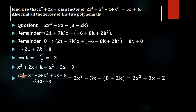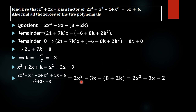So 2x⁴ + x³ - 14x² + 5x + 6 divided by x² + 2x - 3 gives quotient 2x² - 3x - (8 + 2k). Substituting k = -3: 8 + 2(-3) = 8 - 6 = 2, but it is negative 2. So the quotient is 2x² - 3x - 2 on dividing the given polynomial by x² + 2x - 3.